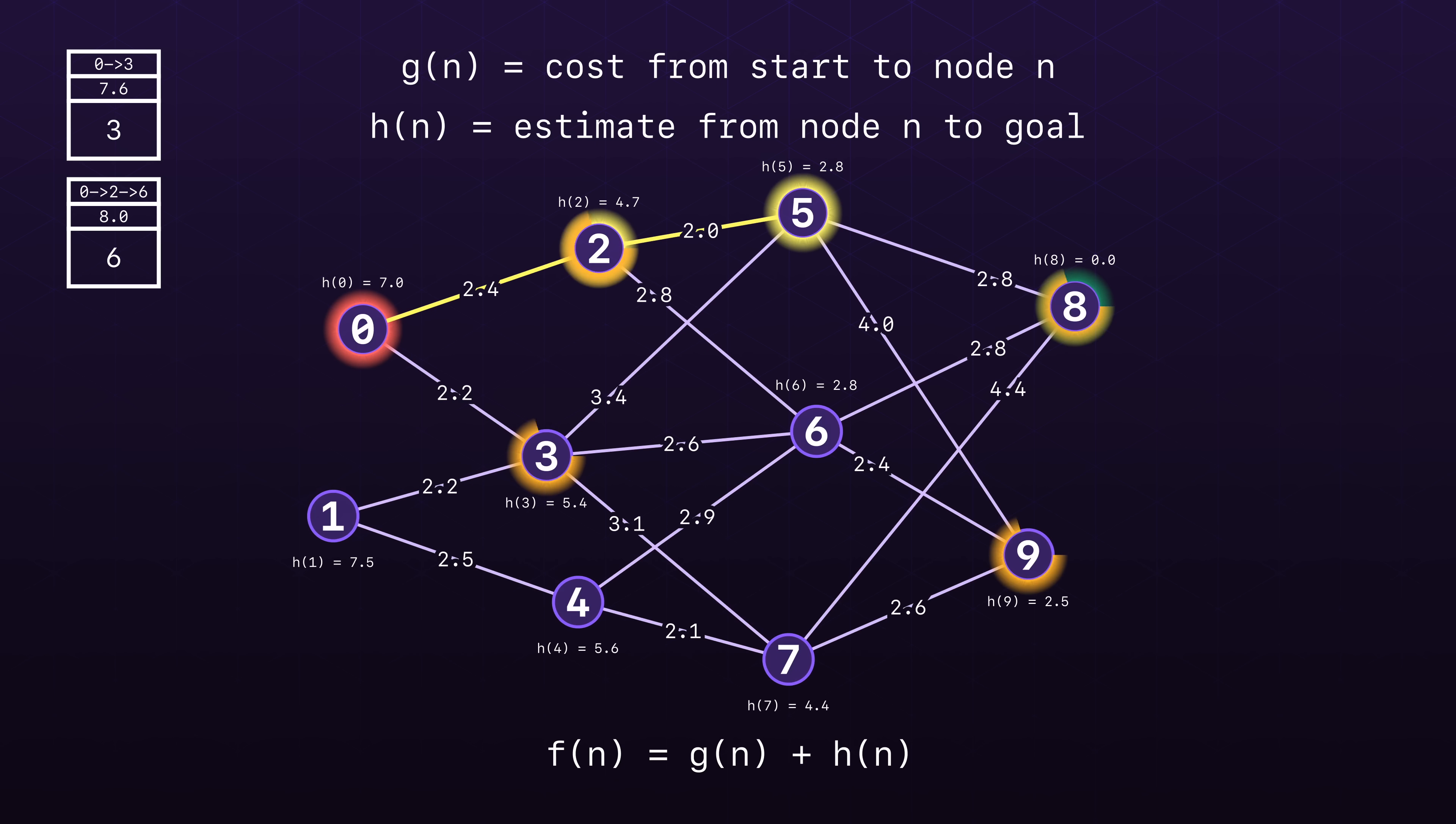Node 5 is then dequeued and shortly thereafter, we reach the goal. What's remarkable here is that we find the optimal path while expanding significantly fewer nodes compared to uniform cost search.